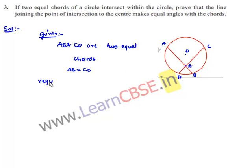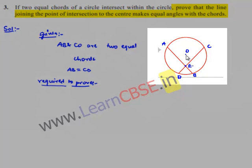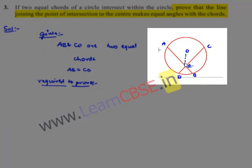We are required to prove that the line joining the point of intersection, that is E, to the center makes equal angles with the chords. That is, angle OEC must be equal to angle OEA. This we need to prove.